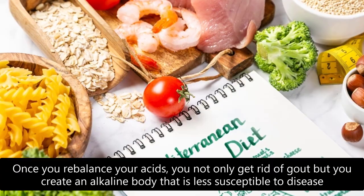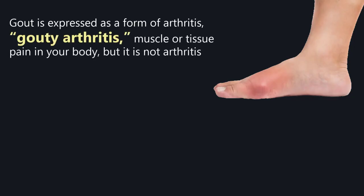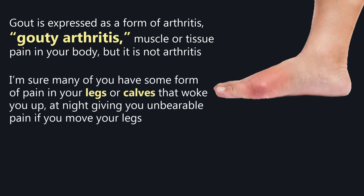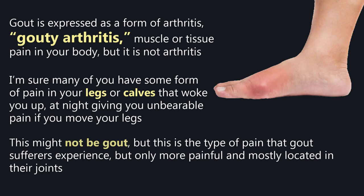Gout is expressed as a form of arthritis — gouty arthritis — causing muscle or tissue pain in your body, but it is not arthritis. Many people experience some form of pain in their legs or calves that wakes them up at night, giving unbearable pain if they move. This might not be gout, but it is the type of pain gout sufferers experience, only more painful and mostly located in their joints.